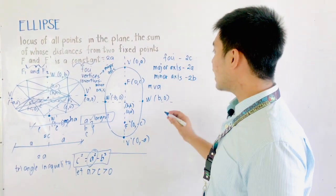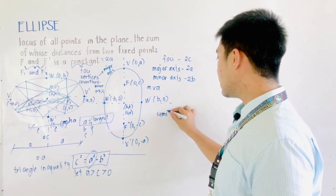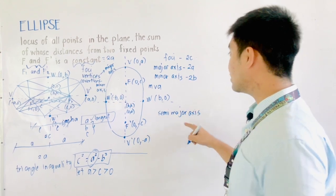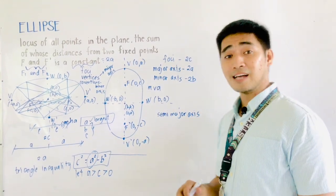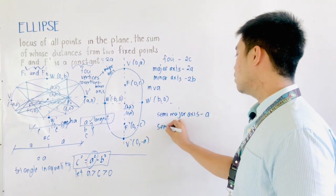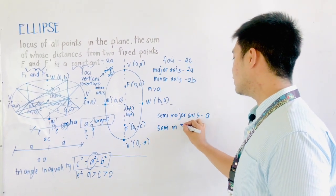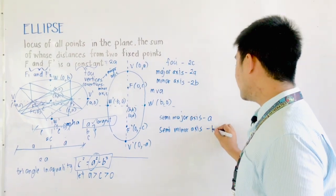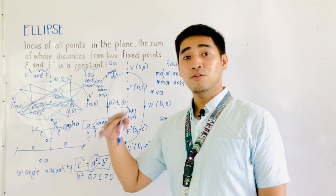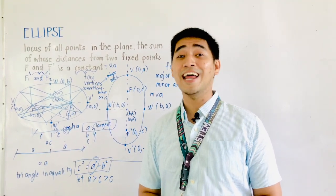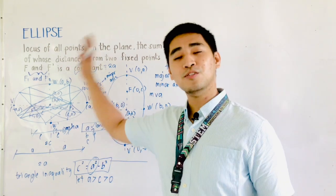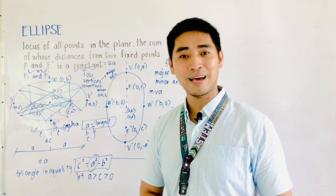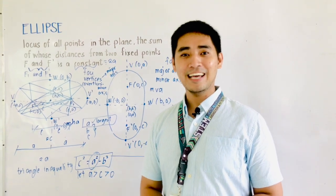If you are asked for the semi-major axis, that is just half of the major axis, which equals A. If you are asked for the semi-minor axis, that equals B. Those are the characteristics of an ellipse. I hope you've learned something from this tutorial. I am Engineer Jad Edward Hernandez, saying that mathematics is always fun. Goodbye and God bless.